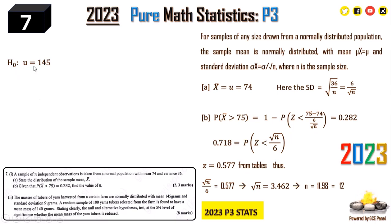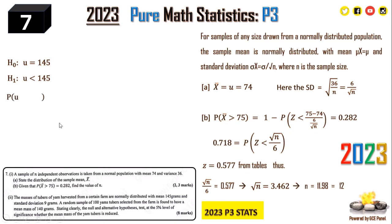Stating the hypotheses: The null hypothesis H₀ is that mu equals 145. The alternative hypothesis H₁ is that mu is less than 145, because we are testing whether the mean mass has been reduced. Note that H₁ cannot be mu equals 140 — it must reflect the direction of the claimed change, so H₁: mu < 145.